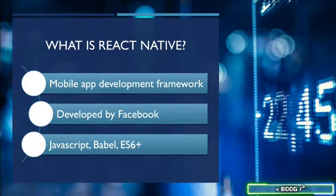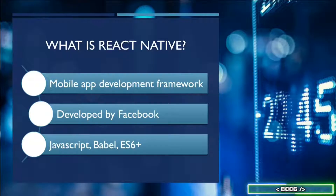What is React Native? React Native is a mobile app development framework that enables the development of multi-platform Android and iOS apps using native UI elements. React Native was developed by Facebook in 2015. It works just like React, but it is made for mobile development instead of web development. It allows you to code in JavaScript without knowledge of the native languages like Java, Swift, or Objective-C.